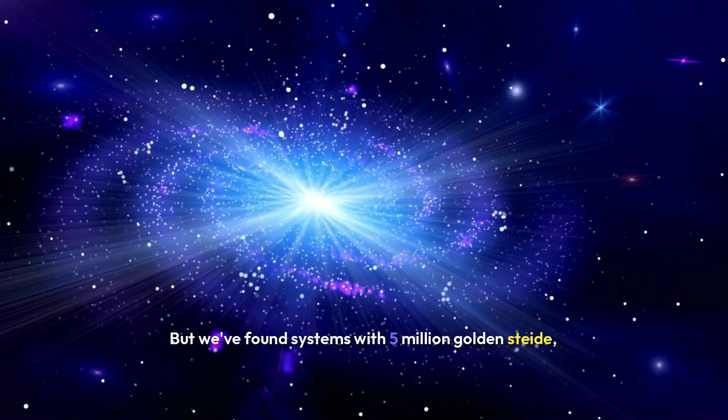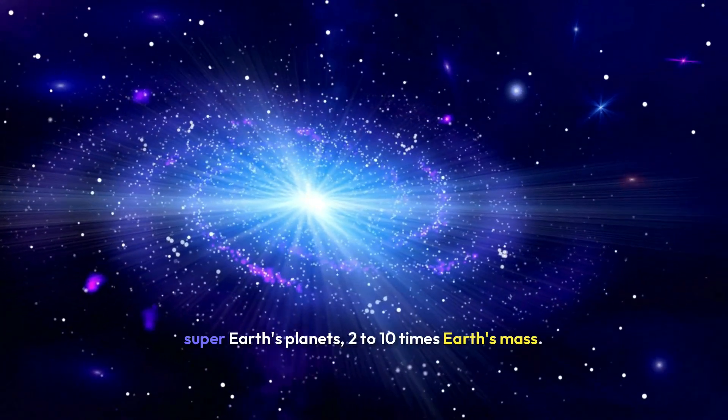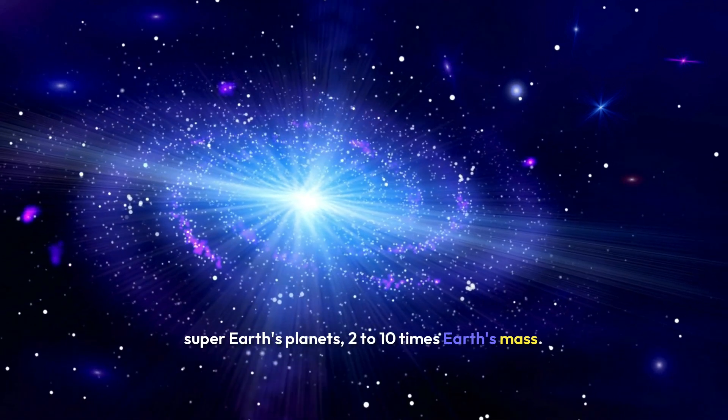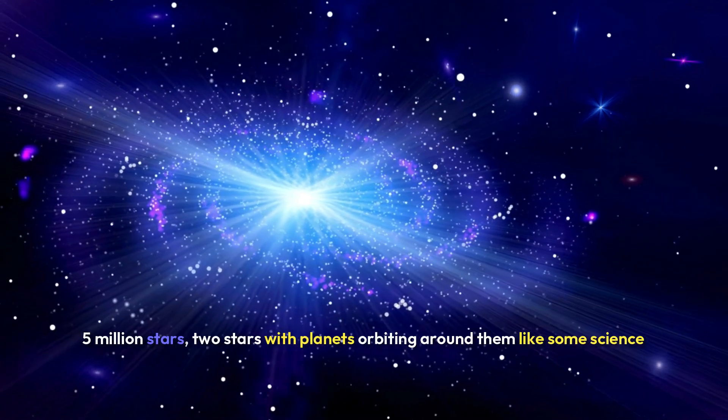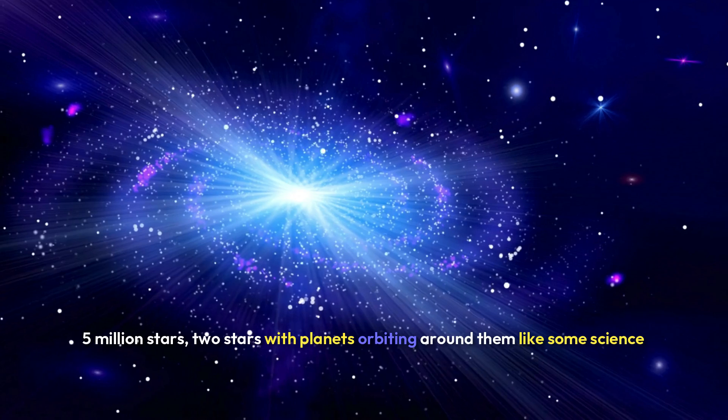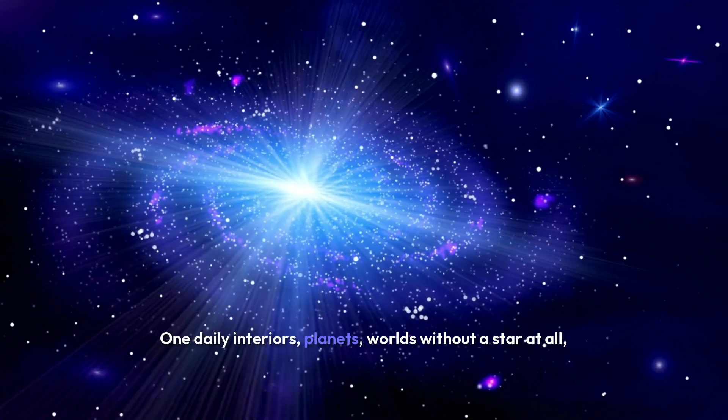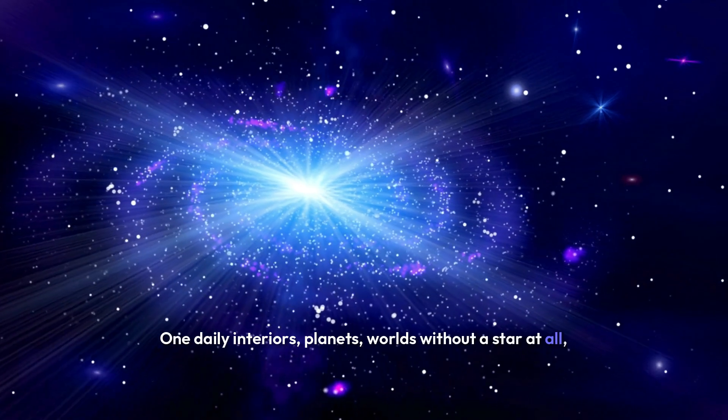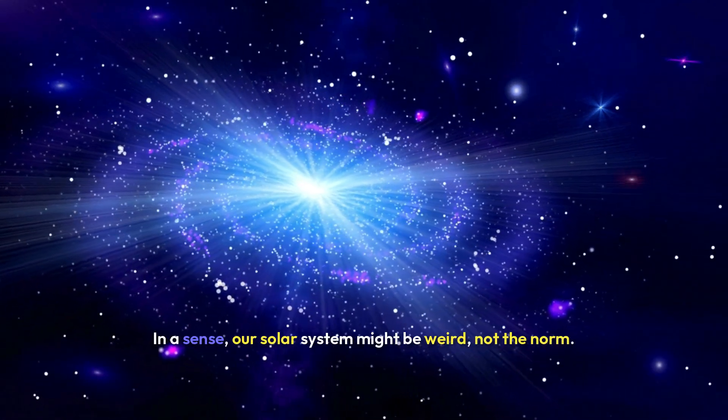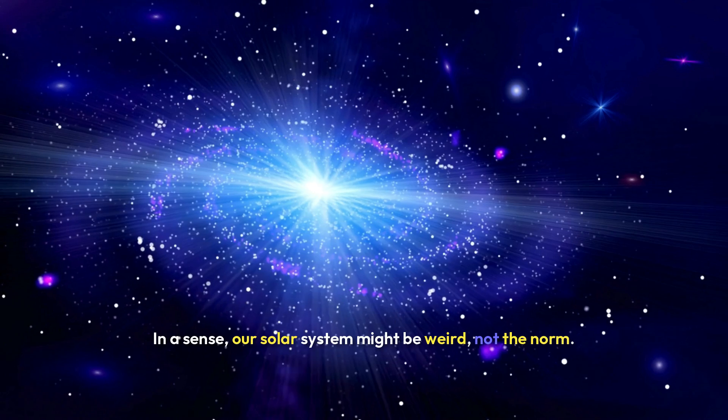But we've found systems with hot Jupiters, gas giants hugging their stars; super-Earths, planets 2 to 10 times Earth's mass; binary stars, with planets orbiting around them like some science fiction fantasy; and rogue planets, worlds without a star at all, drifting alone in the dark. In a sense, our solar system might be weird, not the norm.